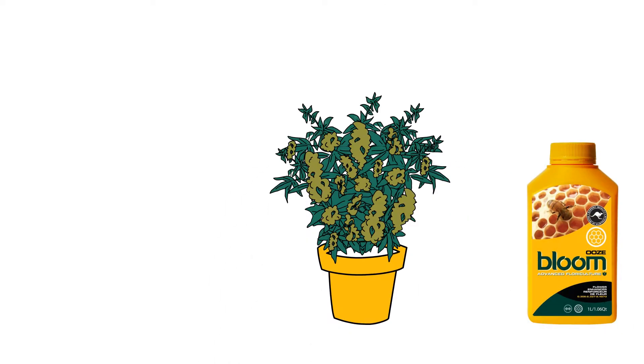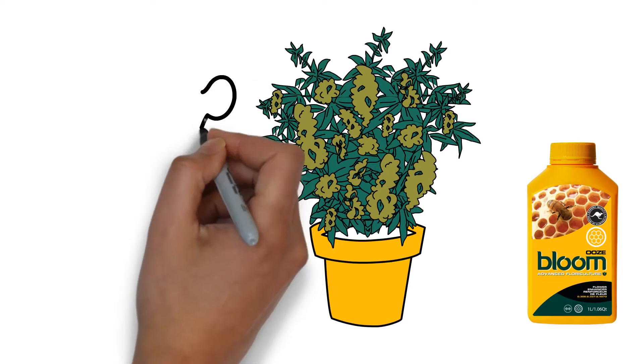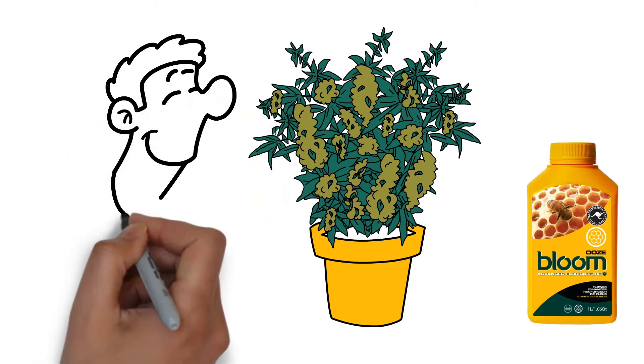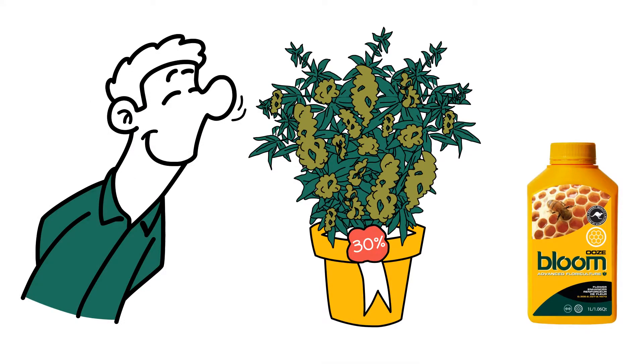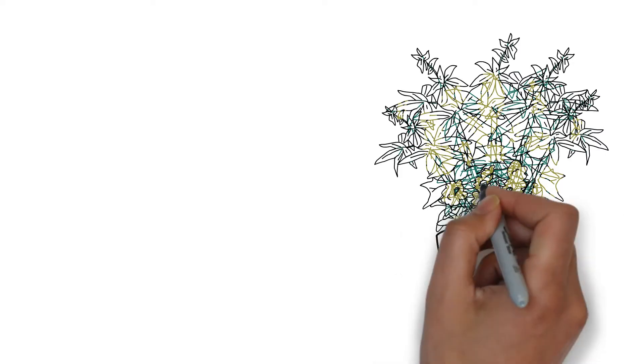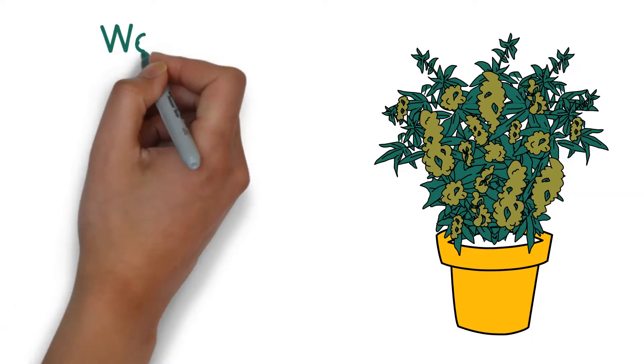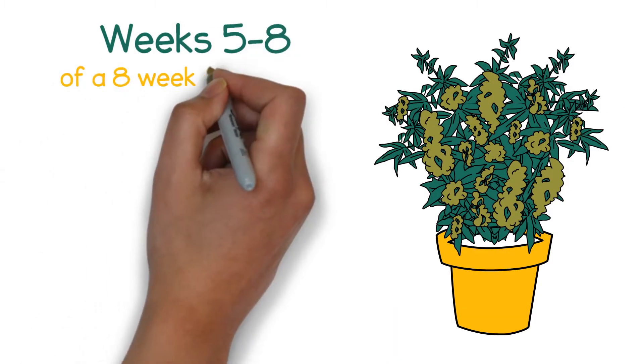Bloom Yellow Bottle Ooze increases not only size but also intensifies flavour and resin of your end product by up to 30%. Feed your plant with Bloom Yellow Bottles Ooze during weeks 5-8 of an 8 week flower cycle.